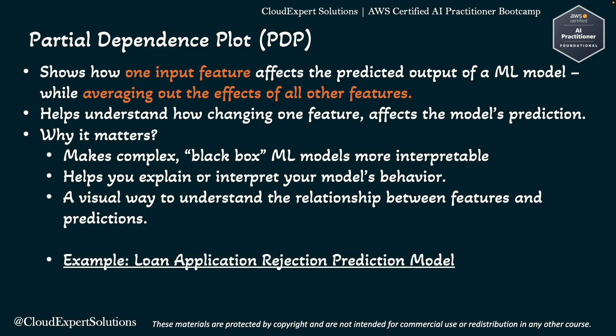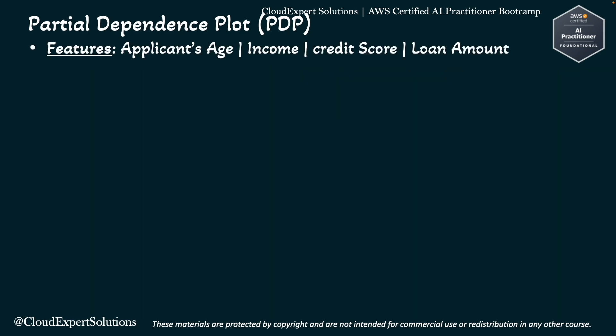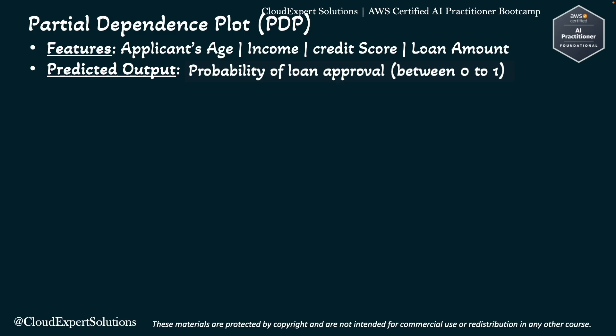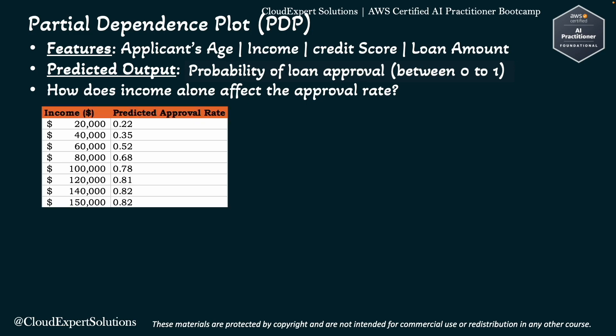Let's understand this with a real-world example. Suppose you have trained a machine learning model to decide whether to approve or reject a loan application. The features could be applicant's age, income, credit score, or loan amount, and the prediction output is the probability of loan approval — a number between 0 and 1. What we want to understand is: how does income alone affect the approval rate?